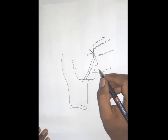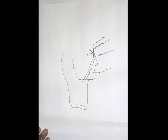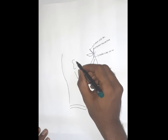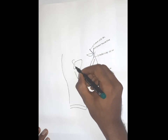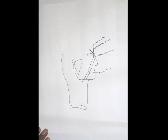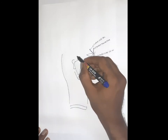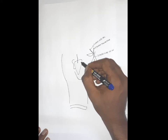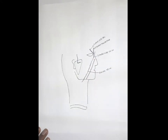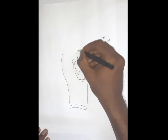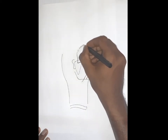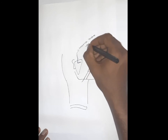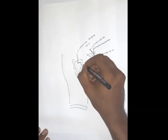The gland located in front of the external acoustic meatus, in and around that region in a pre-mandibular shape, is called the parotid gland. The vein coming from the scalp is called the superficial temporal vein, and the vein coming from the infratemporal fossa is the maxillary vein.